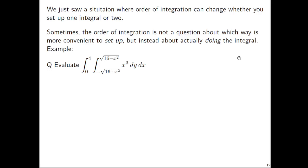Let's look at the following example: integrating from 0 to 4 for x, and then y ranges from negative √(16 - x²) all the way up to positive √(16 - x²), and we'll integrate the function x cubed. If we do this at face value, we should integrate with respect to y first, giving us x cubed times y, which we evaluate at the two y endpoints.